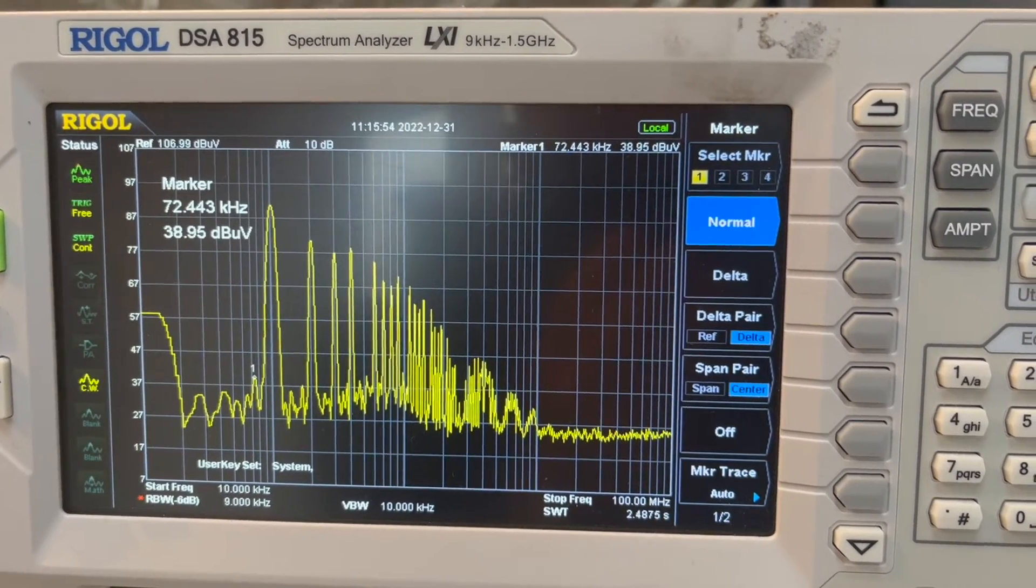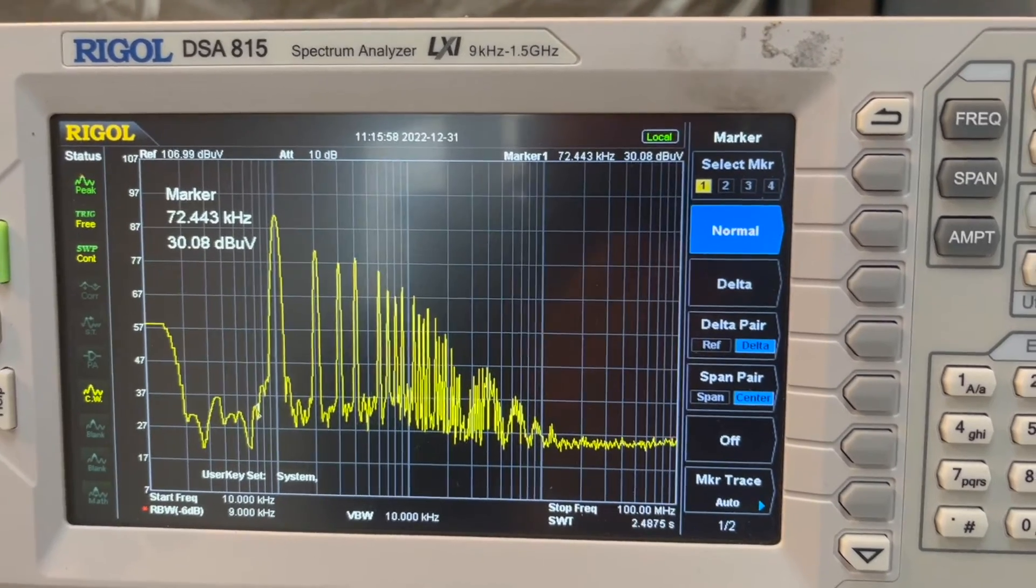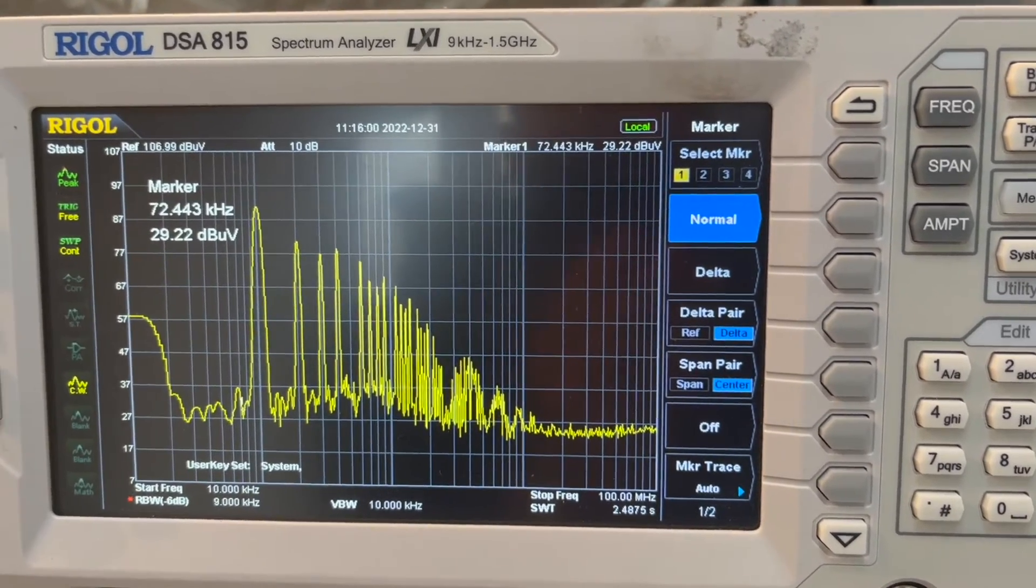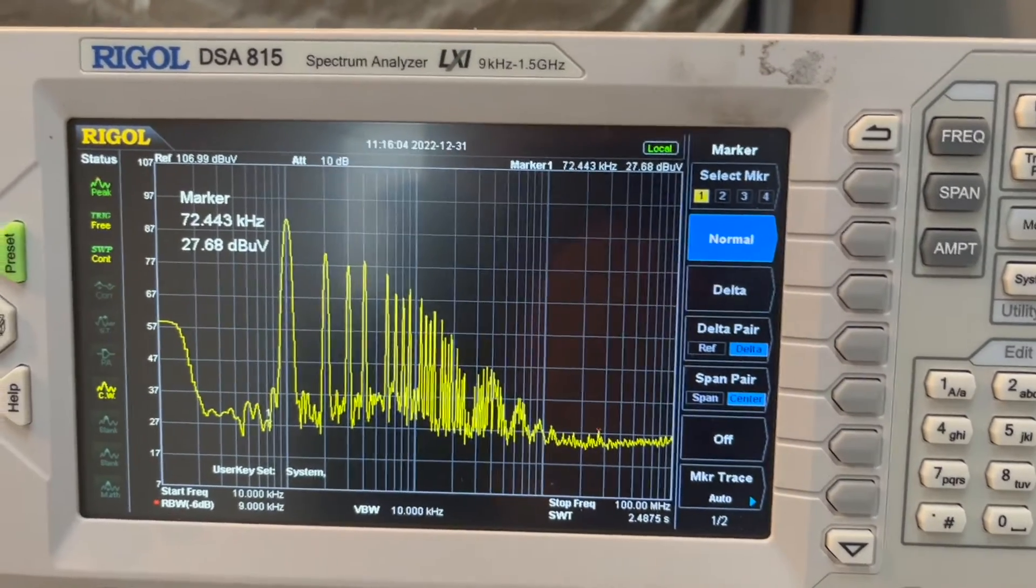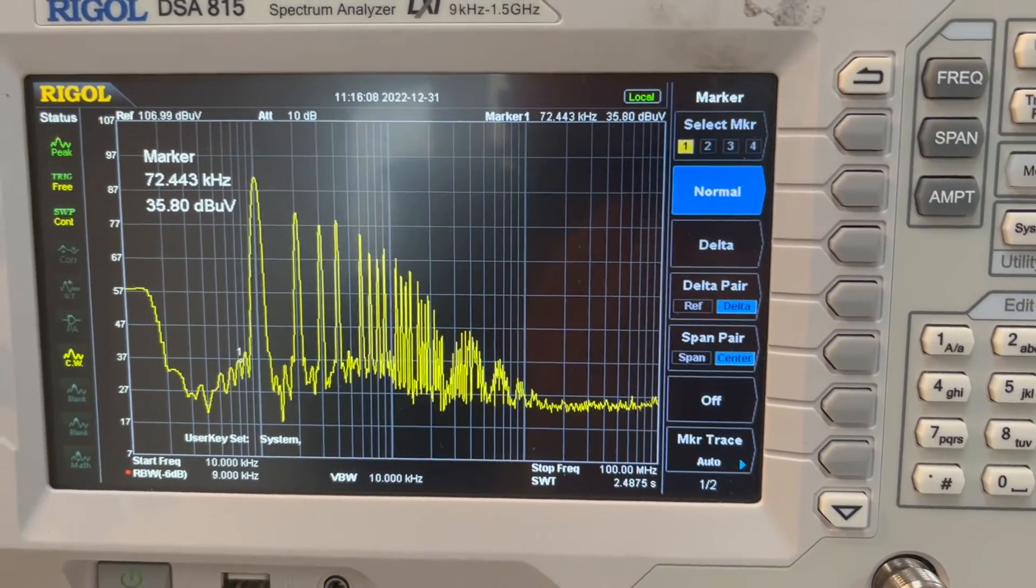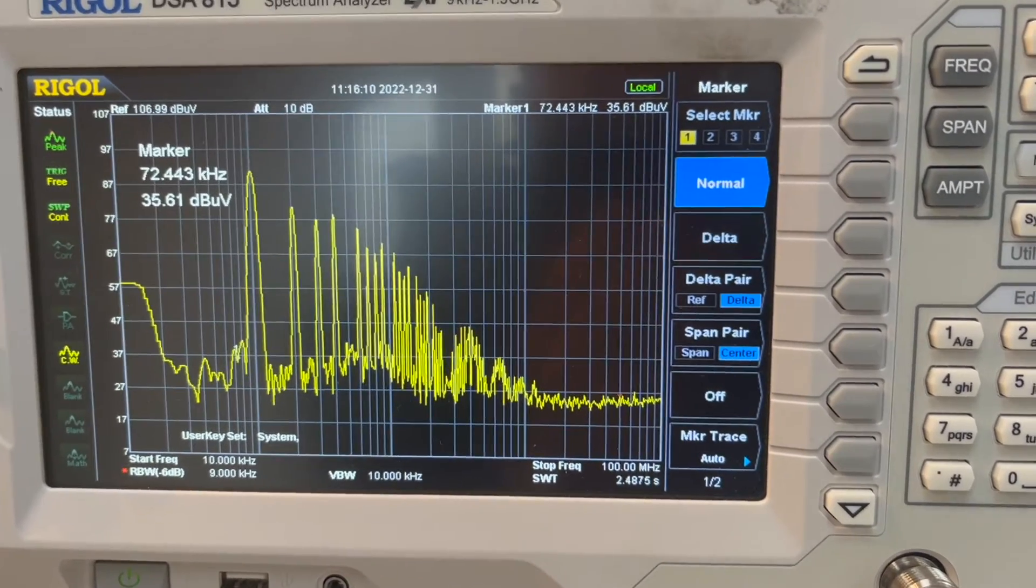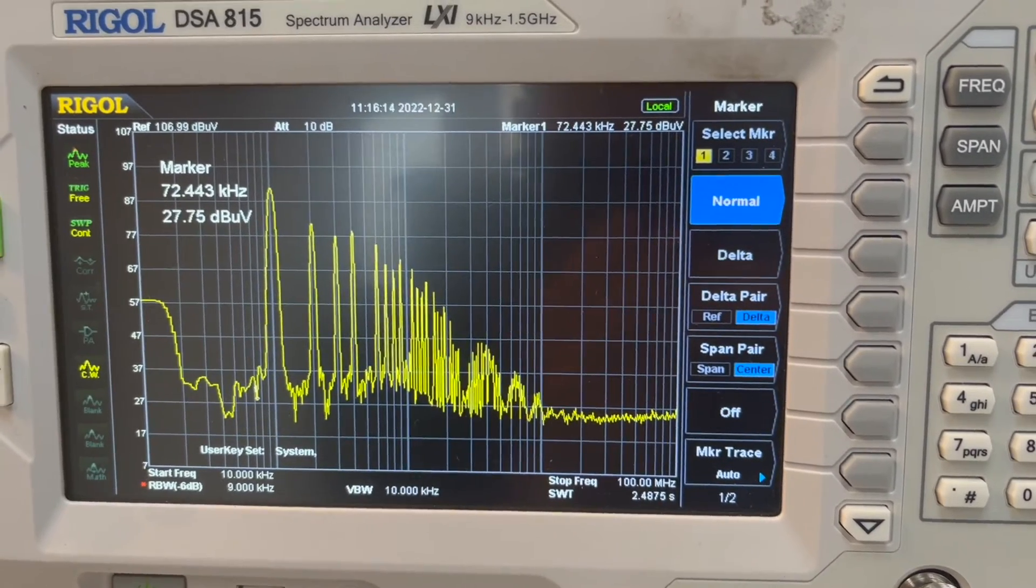Normally, a forward converter cannot exceed 50% duty ratio because they need to demagnetize the transformer. So often people push to that close to 50% duty ratio. And as a result, you will see third, fifth, seventh harmonics higher than the second and fourth. That's the first lesson here.